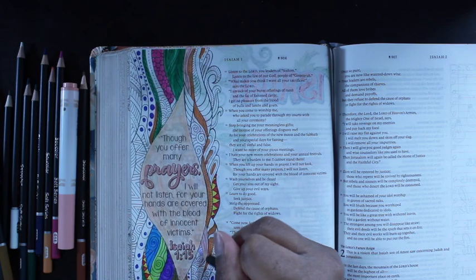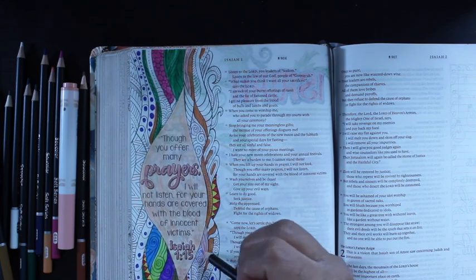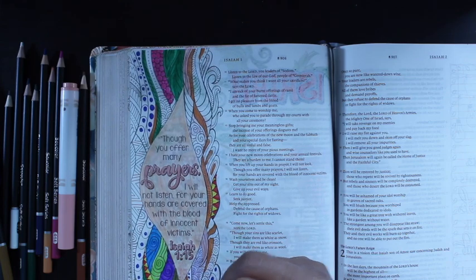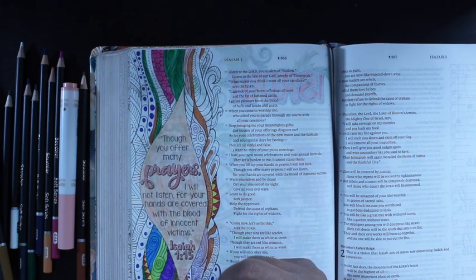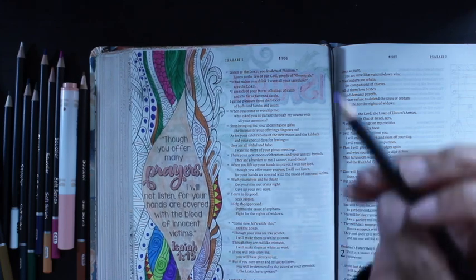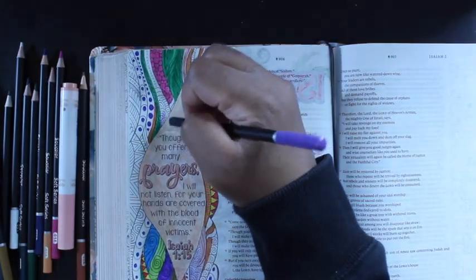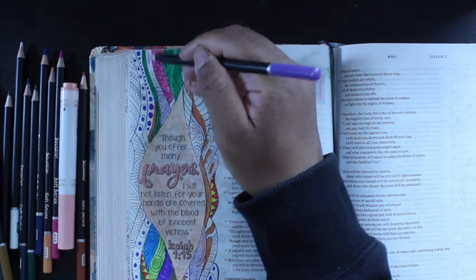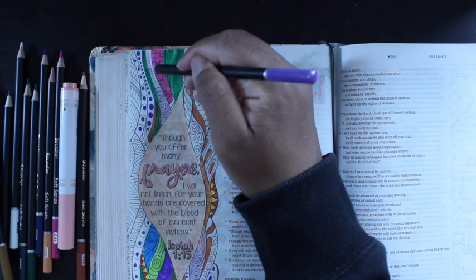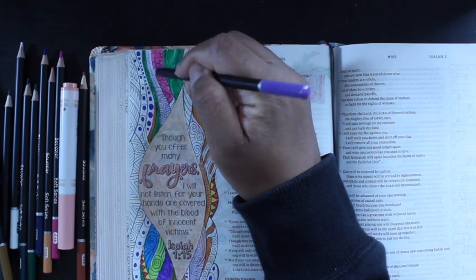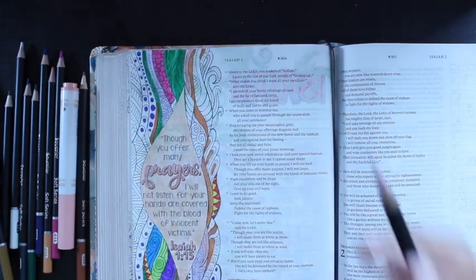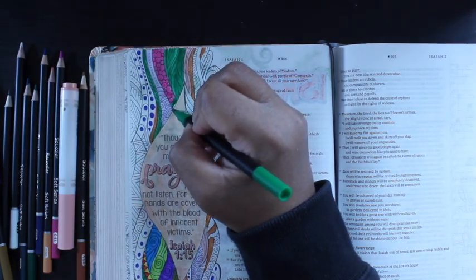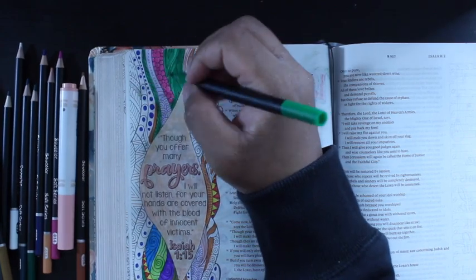For the Lord of heaven's armies has a day of reckoning. He will punish the proud and mighty, and bring down everything that is exalted. He will cut down the tall cedars of Lebanon, and all the mighty oaks of Bashan. He will level all the high mountains, and all the lofty hills. He will break down every high tower, and every fortified wall. He will destroy all the great trading ships, and every magnificent vessel.